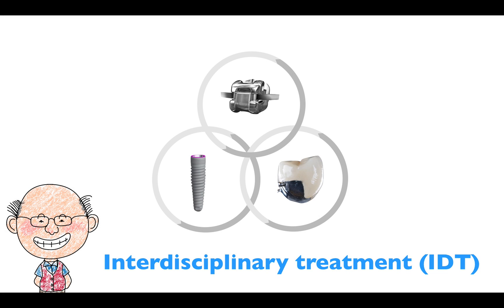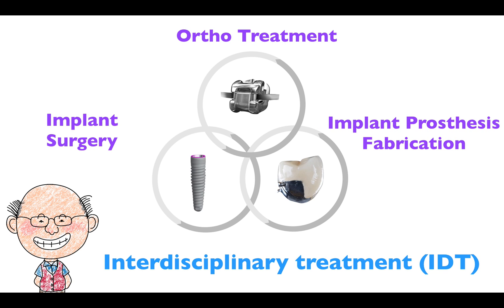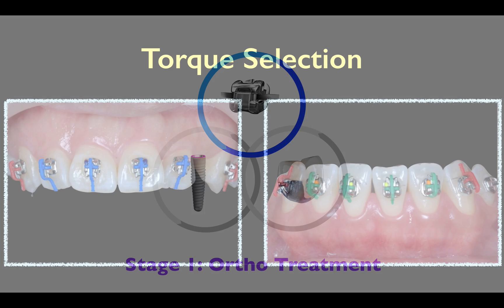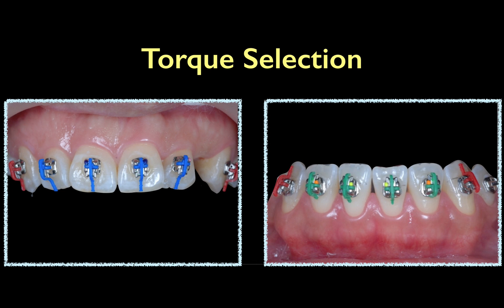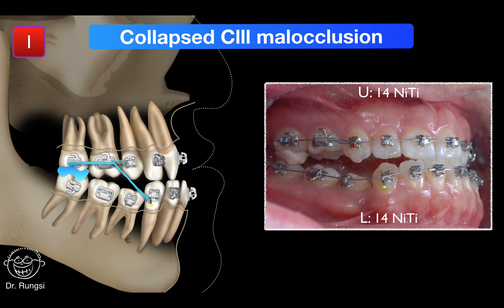This interdisciplinary treatment included ortho treatment, implant surgery, and implant prosthesis fabrication. Let's move to Stage 1: ortho treatment. Bracket selection — stated torque brackets were bonded on the upper anterior teeth, and upside-down low torque brackets were bonded on the lower anterior teeth. In the beginning, posterior bite bolts were bonded on the upper second molar to create intermaxillary space.